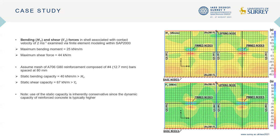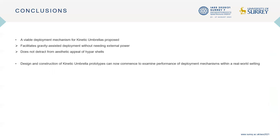A mesh of grade 80 reinforcing bars with a diameter of 12.7 millimeters spaced at 80 millimeters were assumed as the shell reinforcement. After calculating the static capacity, it is seen that both the moment and shear capacity of the umbrella is in excess of the demand. Note that this approach is inherently conservative since the dynamic capacity of reinforced concrete is likely to be much greater than the static capacity calculated here. In conclusion, we propose a viable deployment mechanism for kinetic umbrellas. This mechanism enables deployment without requiring external power and does not detract from the aesthetics of each hypershell. The design and construction of prototype umbrellas can therefore commence, which will be the next step of this research. Thank you for attending this presentation.